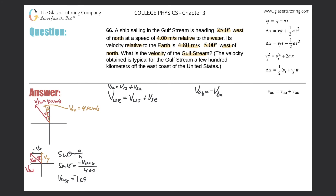We want the velocity of the water relative to the ship, not the ship relative to the water. So the velocity of the water relative to the ship in the x direction is the negative of negative 1.69, which is simply positive 1.69.